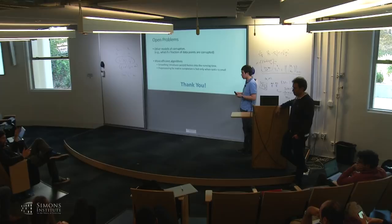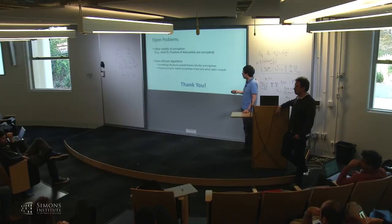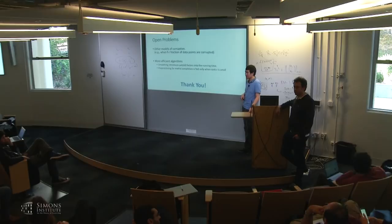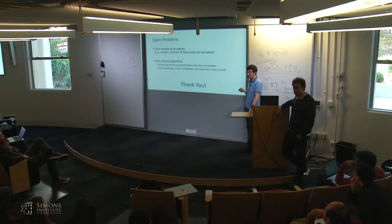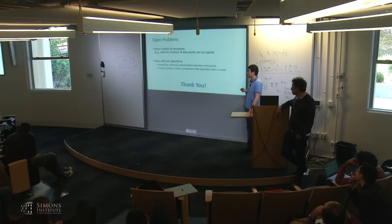Q: In the semi-random model for matrix completion, how does the local geometry look around the global minima? The local geometry actually does not change too much — it's still restrictively strongly convex locally. However, it's unclear what the radius of contraction is, because previously a fairly large radius of contraction could be shown, but now very locally nothing is changing and what happens to the radius of contraction is unclear.